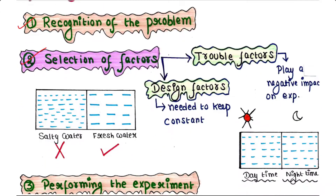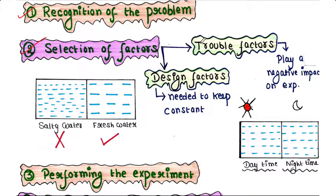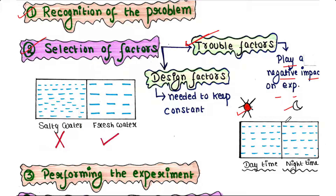There are certain factors which may influence the performance of the experiment. If these factors play a negative impact on the experiment, they are called trouble factors. Generally, researchers do not want to deal with these factors. For example, in the fish experiment, the presence or absence of sunlight has a different impact on outcomes, but we don't want to consider this factor — hence it is just a trouble factor.